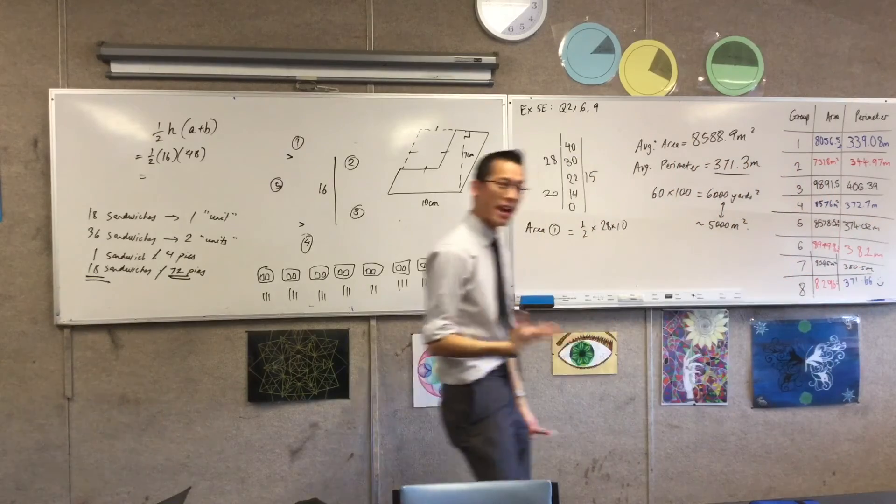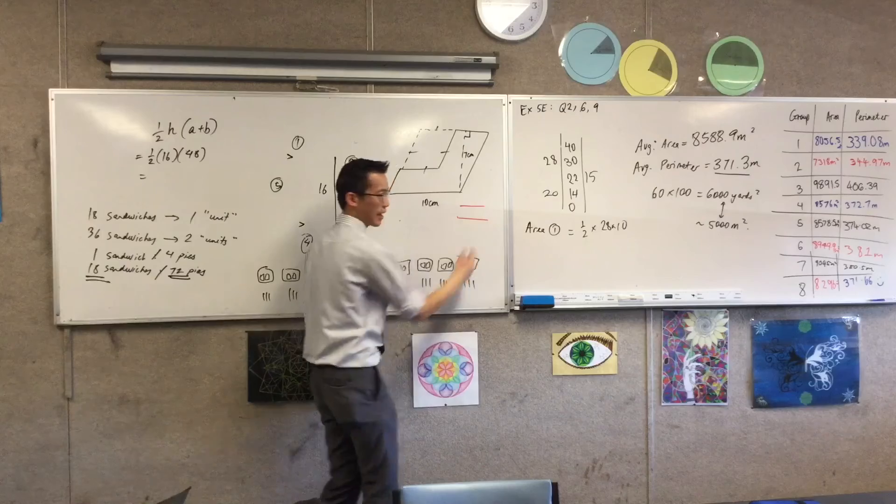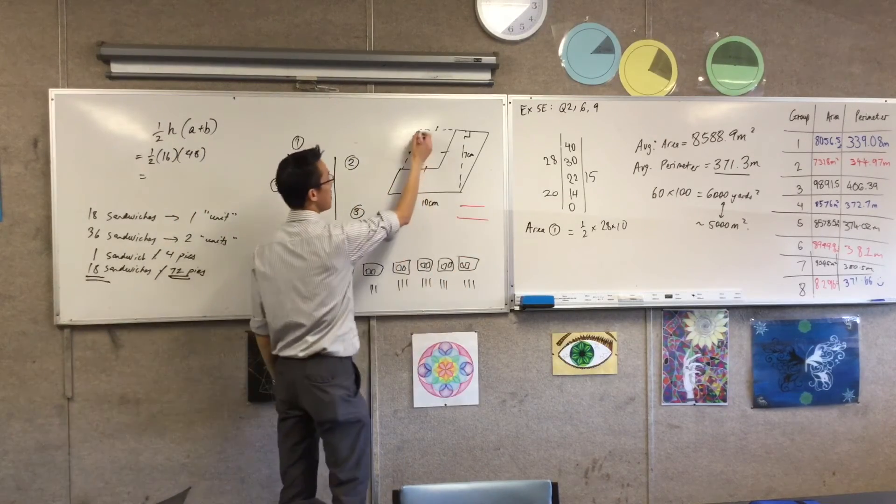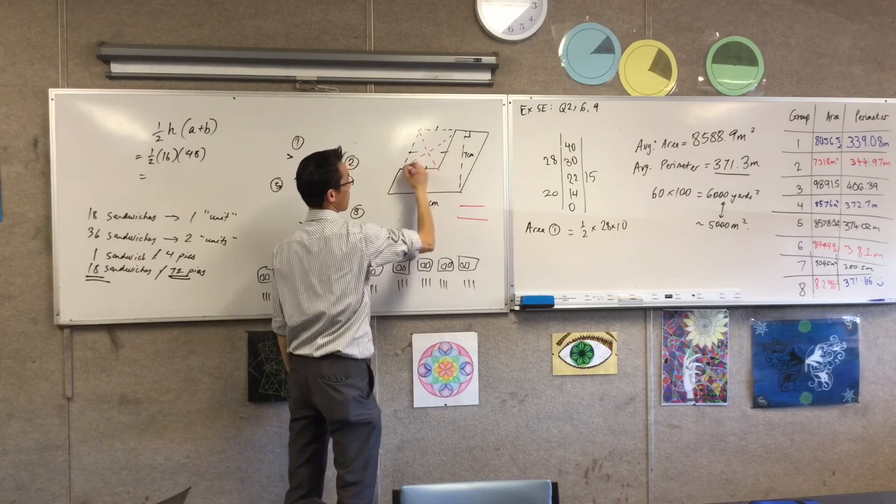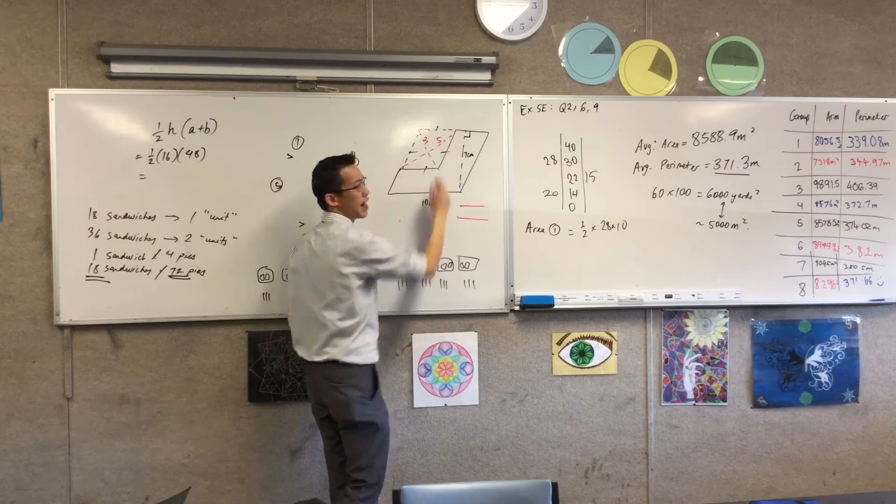Now, because they don't want to make the diagram too crazy, they've actually put over here on the side two extra bits of information. They give you two extra lengths. These are the lengths they give you. From memory, I think they're 3 and 5.